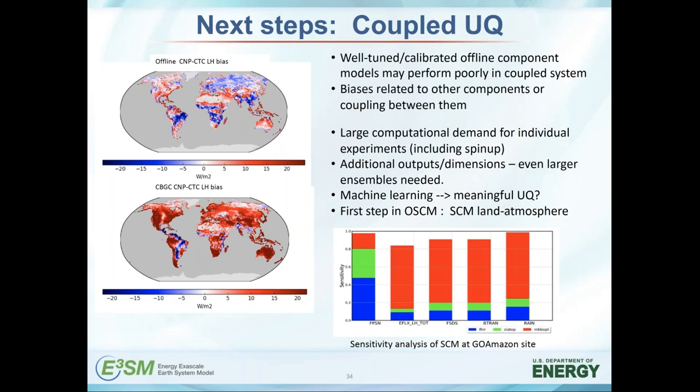In the AWESOME CIDAC project, we're looking at single column model land-atmosphere coupling, beginning to look at that. We have an example of sensitivity analysis performed at a GoAmazon site from the library of cases available within the single column model. Given that framework, we can look at the sensitivity of not just land variables, but also atmosphere variables in the single column framework — such as rain — and the sensitivity of those variables to land model parameters.